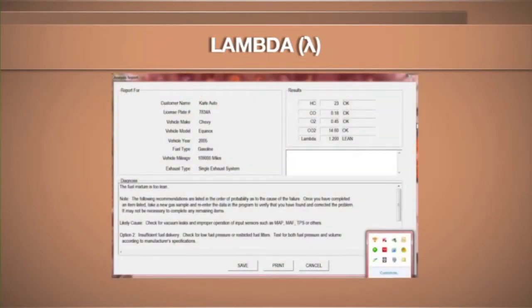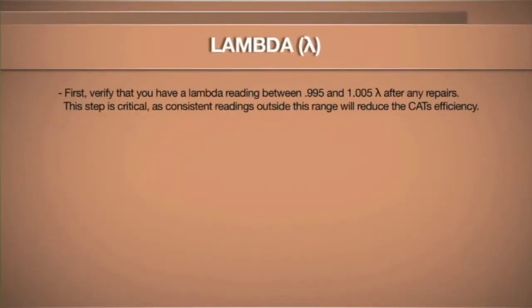This is a screenshot of the ANSED calculator, which we'll use to identify faults in a system. We put in the gas readings that we have, and the lambda calculator will come up with a direct determination of what may be wrong with the car. Before identifying that a cat is faulty, we need to make sure the lambda calculations are within a certain range. A lambda calculation out of range may prevent the catalytic converter from lighting off completely. We want a reading between 0.995 and 1.005 lambda after a repair — this step is critical, as outside that range the catalytic converter may not be able to light off efficiently.